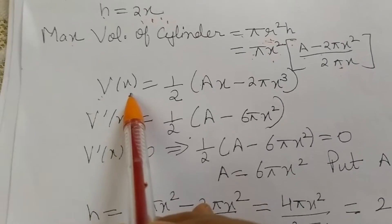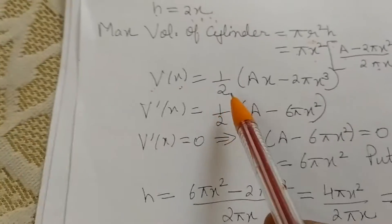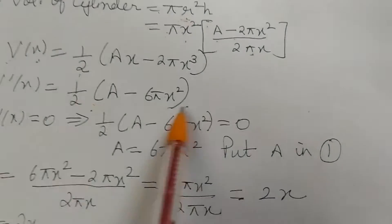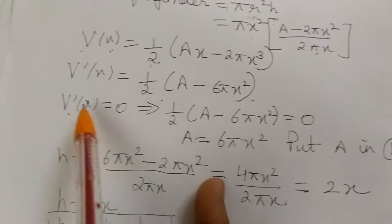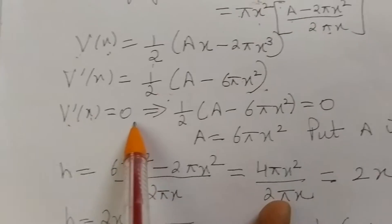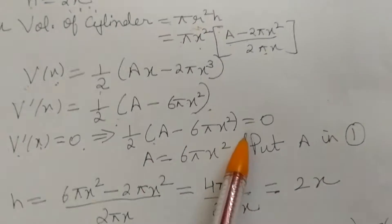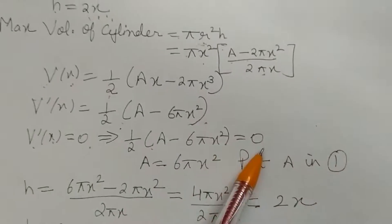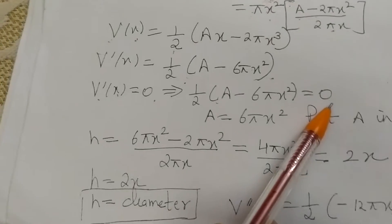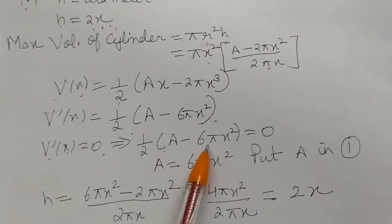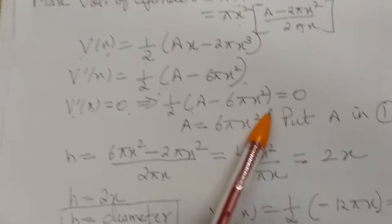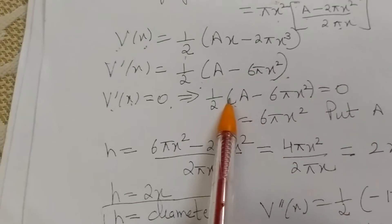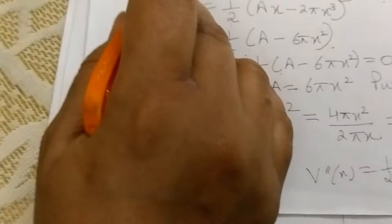Now we find the derivative of volume. Setting derivative equal to 0 and solving, we get A = 6πx².